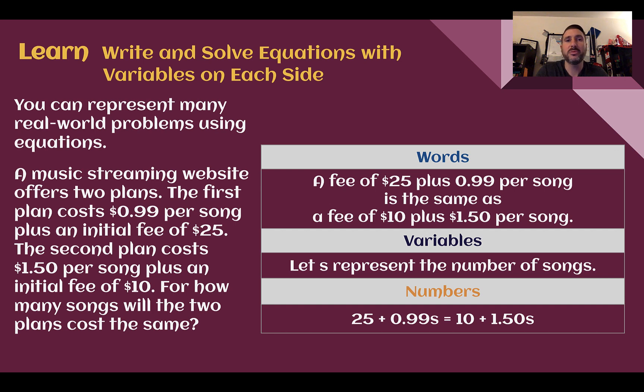And then in numbers, writing our actual equation, we could say that 25 plus 0.99s is the same as or equal to 10 plus 1.50s.